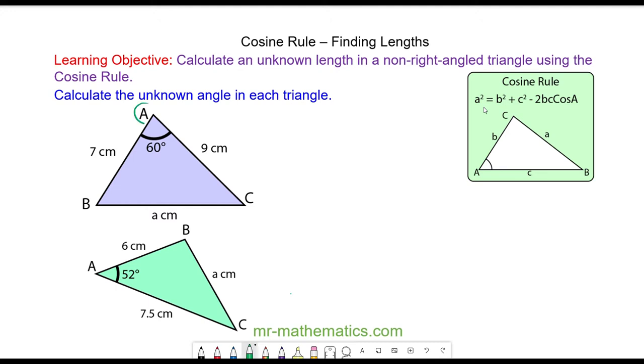The angle we label with a capital letter and the length of the opposite side we label with the lowercase. So if this is angle B then the 9 is the length of the side opposite. If this is angle C, the 7 is the length of the side opposite which we call lowercase c.